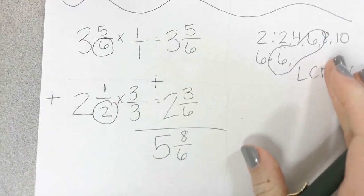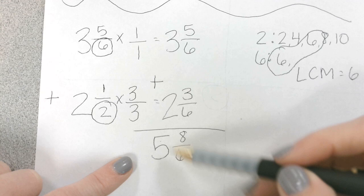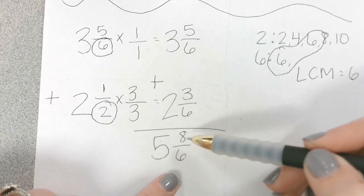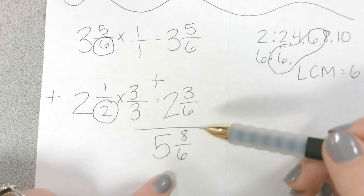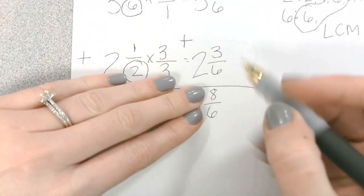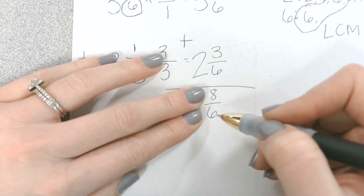Okay. Now here we have what's called an improper mixed number. It's a mixed number because there's a whole here. But it's improper because in the fraction, we have 8 over 6. And 8 over 6 is improper. Okay. So the way that we're going to do this is we're going to ignore the 5 just for a minute. And we're looking at 8 over 6. So I can take a whole out of 8 over 6.